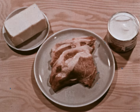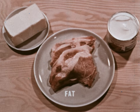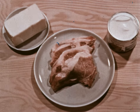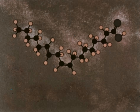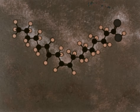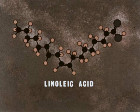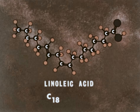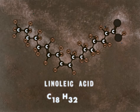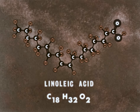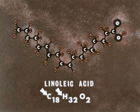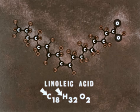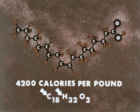Another essential energy producing nutrient is fat. Fat occurs in such foods as butter, the fat of meat, and shortening. Fats are digested to molecules of simple fatty acids, indicated by this diagrammed molecule of linoleic acid. This molecule is made up of 18 carbon atoms, 32 hydrogen atoms, and only two oxygen atoms. Because it has so many carbon and hydrogen atoms, when this fat molecule combines with oxygen, it releases a great deal of energy — about 4,200 calories per pound.